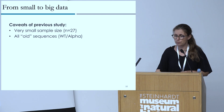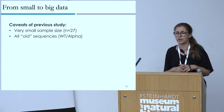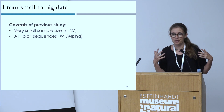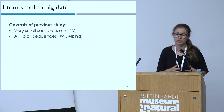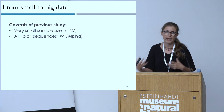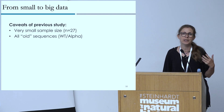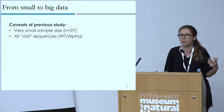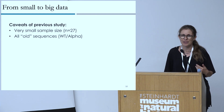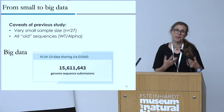Moving from what we call small to big data: the caveats of the previous study were that we worked on only 27 case studies — very small sample size — all from wild-type or Alpha variant sequences. We wanted to go bigger, as we were really limited in the conclusions we could draw with such limited statistical power.